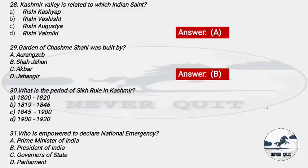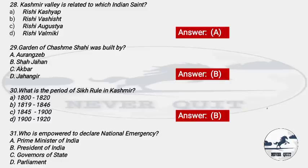Question 30: What is the period of Sikh rule in Kashmir? Options: A) 1800–1820, B) 1819–1846, C) 1845–1900, D) 1900–1920. The right answer is option B — Sikh rule in Kashmir lasted from 1819 to 1846.